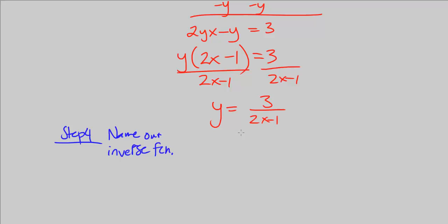Okay, so let's go ahead and name it. That's just this step. We go ahead and say f to the negative 1 of x equals, and now we have it already, 3 over 2x minus 1, and we're done.